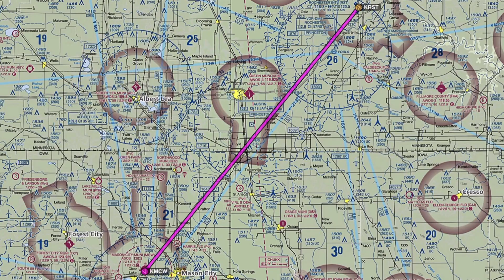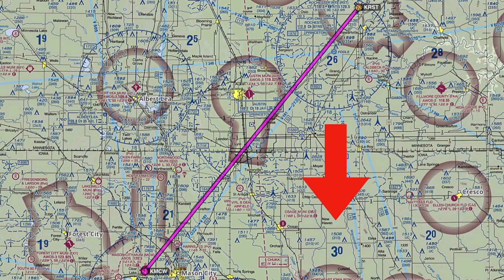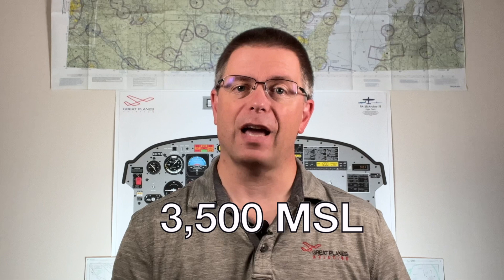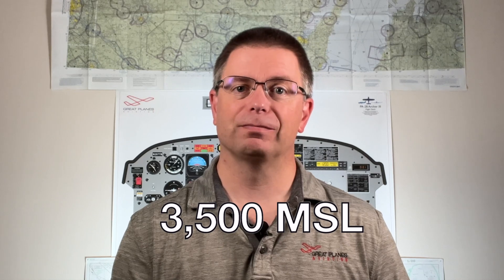Looking at the route for our trip, the largest MEF is 30, or 3,000 feet. Since this is not over congested airspace, we'll add 500 feet. So the lowest we should cruise is 3,500 feet MSL.